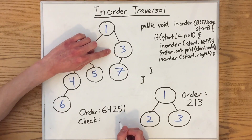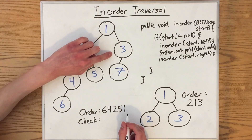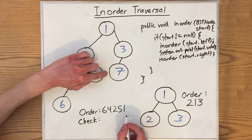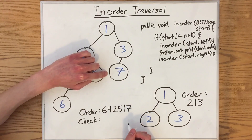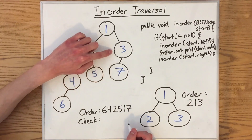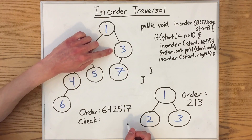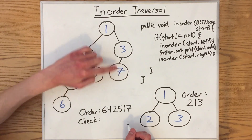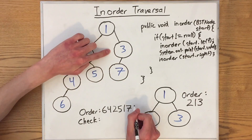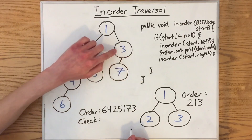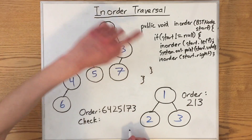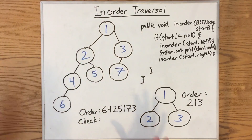Then we go recursively into the right subtree. First, we call inorder recursively to get to this node. We print out its value. Since it's a single node, we're done here. We finish the tree rooted at this node's left subtree, which is just a single node. So we can now print out its value. Then we check its right subtree — it's null. So now we've finished processing the entire tree.